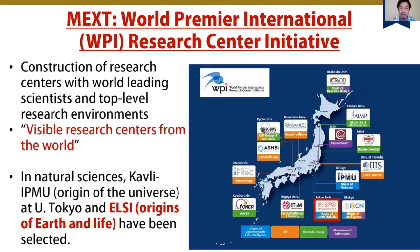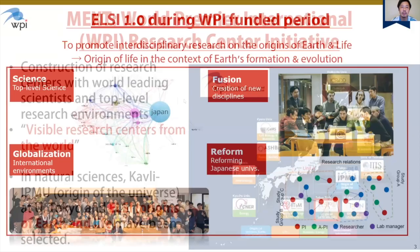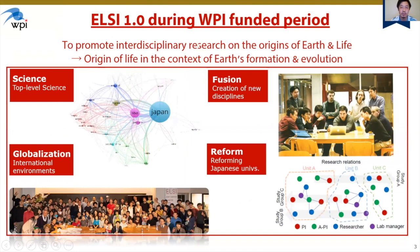This WPI research center initiative aims to construct a research center with the world's leading scientists and a top-level research environment — a visible research center in Japan seen from the world. Among the roughly 13 or 14 WPI research centers, ELSI is the unique institute which aims to understand and investigate the origins of Earth and life on Earth.